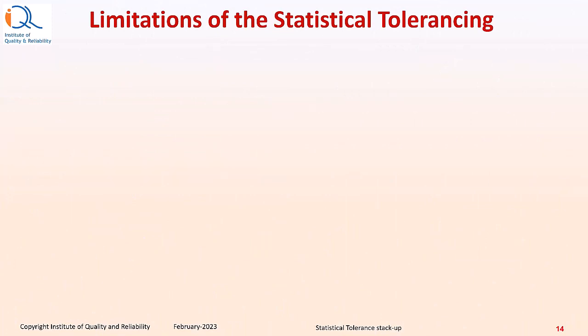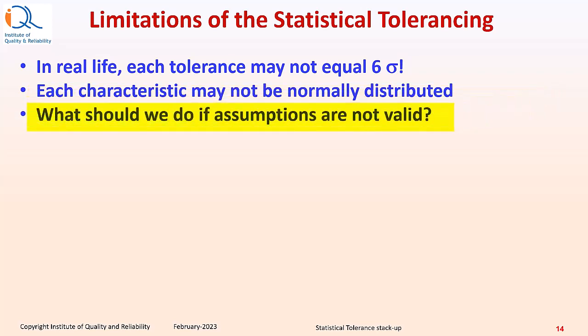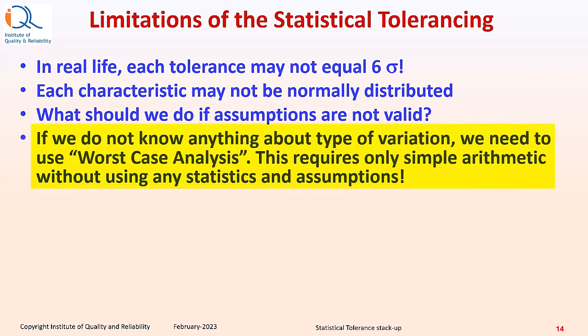Let us understand limitations of statistical tolerancing. In real life, each tolerance may not equal to 6 sigma. Each characteristic may not be normally distributed as well. What should we do if the assumptions are not valid? If we do not know anything about the type of variation, we need to use worst case analysis or extreme value analysis. This requires only simple arithmetic without using any statistics and assumptions.